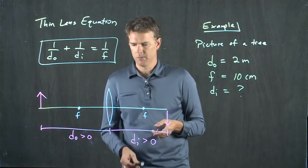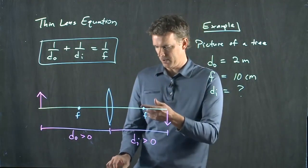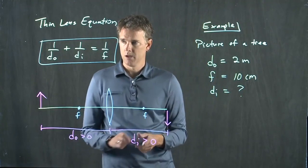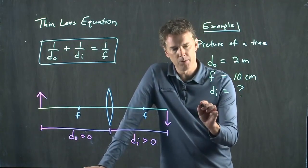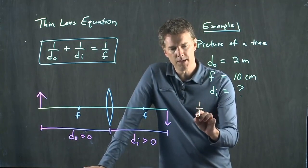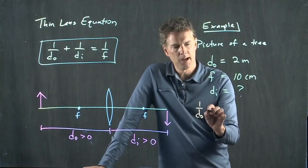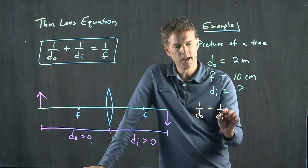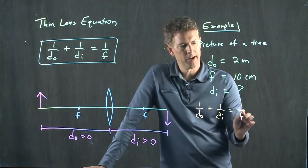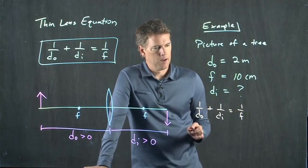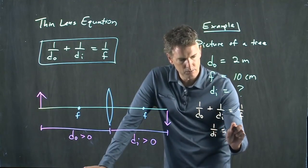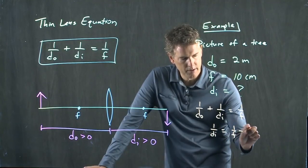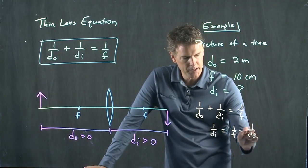How do we do that? Well, here's our lens equation. We can just take that equation and rewrite it, and then we can solve for DI. So we have 1 over DO plus 1 over DI equals 1 over F. So 1 over DI equals 1 over F minus 1 over DO.